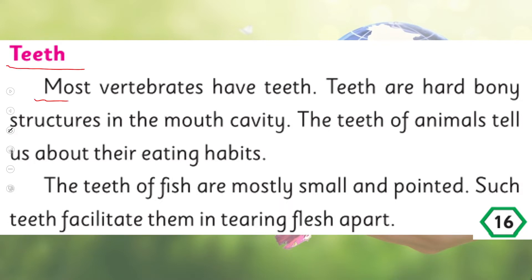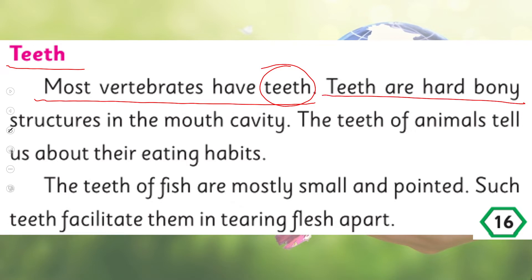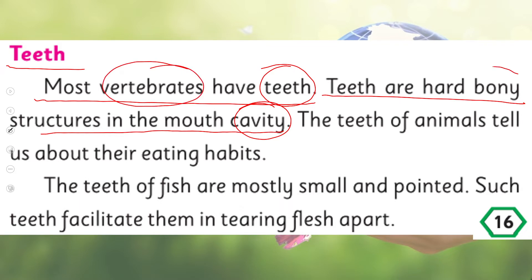On page number 16, let's read about teeth: 'Most vertebrates have teeth. Teeth are hard, bony structures in the mouth cavity.' Jo daant hain, yeh taqriban tamam vertebrates ke paas hoti hain, aur yeh bony part hoti hain hamare mooh ke andar.